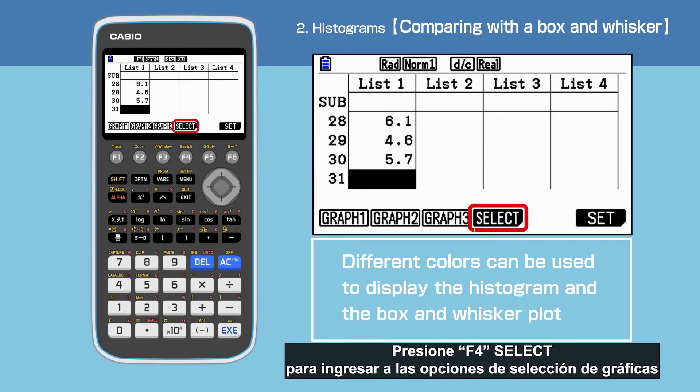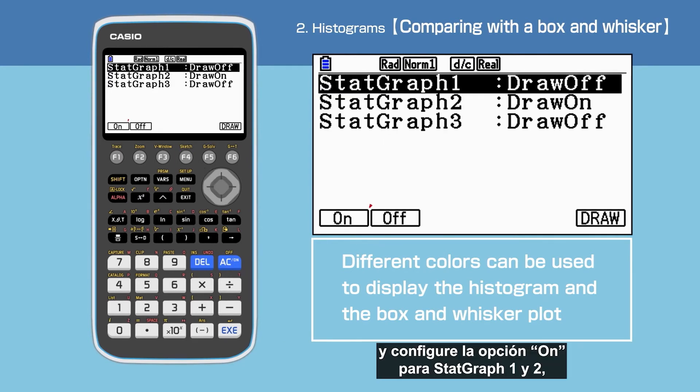Press F4 to select the two graphs to be drawn on the same screen. Press F1 to switch on Start Graph 1, and verify Start Graph 2 is still switched on as well.